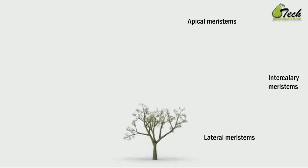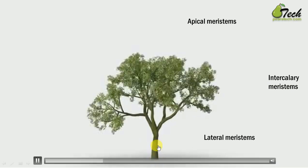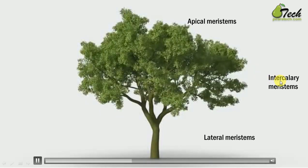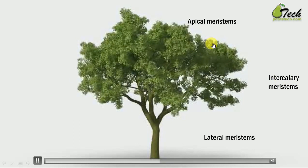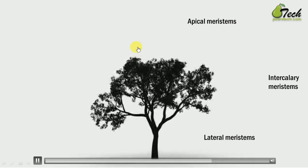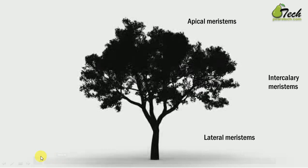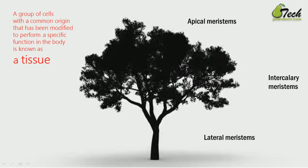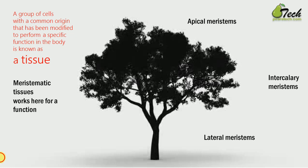In the video, you can see the plant growing from the bottom — the lateral meristem causes the girth to increase; the intercalary meristem at the nodes causes those parts to grow; and the apical meristem at the top keeps the plant growing upward. So, to recap: a group of cells with a common origin that has been modified to perform a specific function in the body is known as a tissue. Meristematic tissue works for the specific function of growth. Let's meet in the next video.